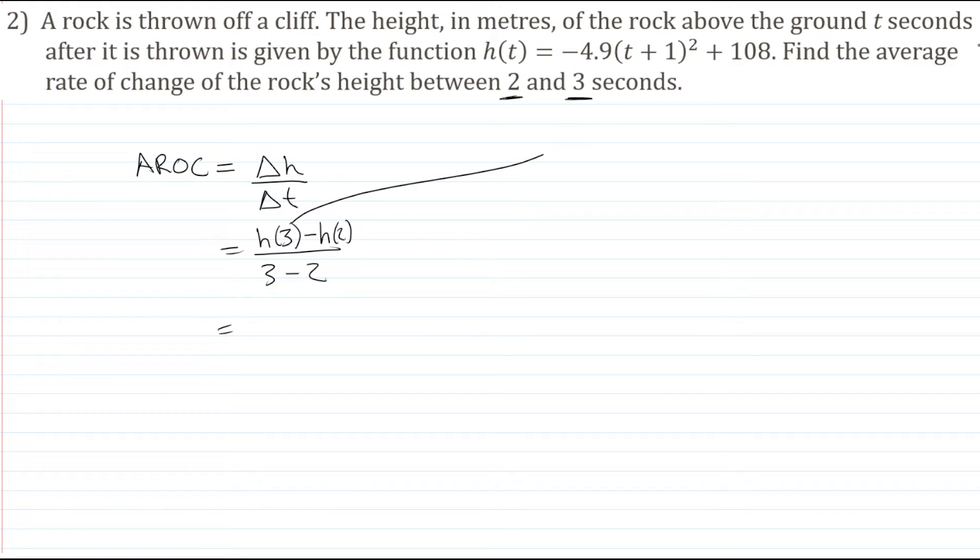Well, for h(3), I'm going to just substitute 3 into our function here and see what I get. Now I'm going to do that with my calculator right now. So we have -4.9 times t plus 1. So that's going to be 3 plus 1, which is 4, squared, plus 108. And that gives me 29.6 meters. And I'm going to do the same thing with a time of 2 seconds, I'm going to substitute 2 into that function to get our corresponding height. So -4.9 times 2 plus 1, that's 3 squared, plus 108. That gives me 63.9 meters.